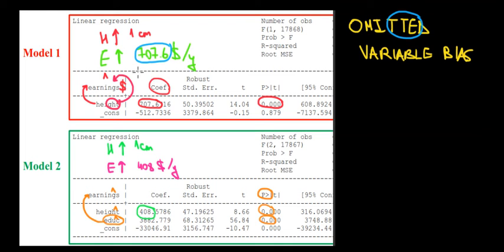But when we control for that—when we included education in the second model over here—the effect of height on earnings decreased because now it is more accurate. Basically, we subdivided the 707.67 into one effect from height and one effect from education.